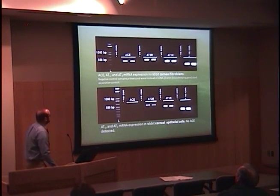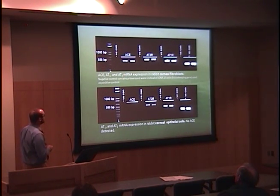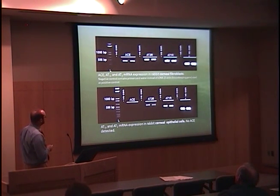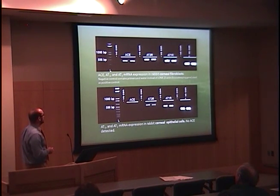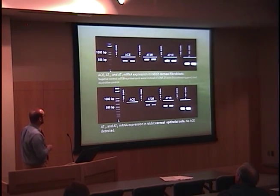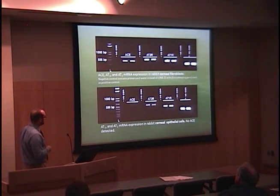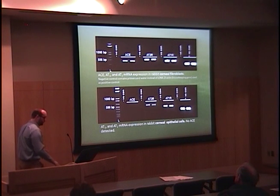On a standard gel of these PCR products — with a DNA ladder on the left — in the rabbit corneal fibroblasts we found ACE expression, AT1 receptor expression, and AT2 receptor expression. Our positive control was beta-actin, a standard housekeeping gene present in almost all cells, and the negative control was water, which showed no PCR products as expected. So in rabbit corneal fibroblasts, we found all three elements of the initial cascade. In the rabbit corneal epithelial cells, we found AT1 receptor and AT2 receptor expression, but no angiotensin-converting enzyme.